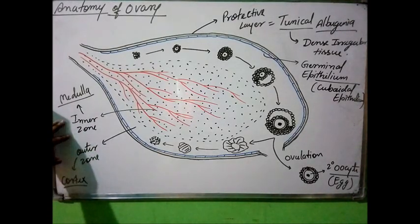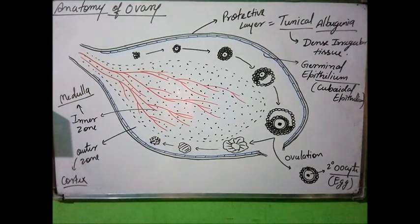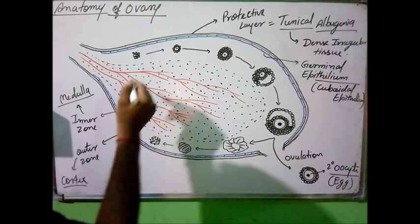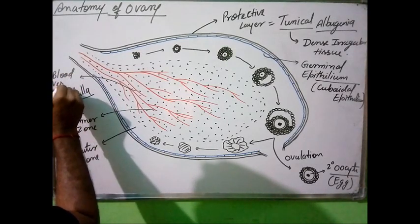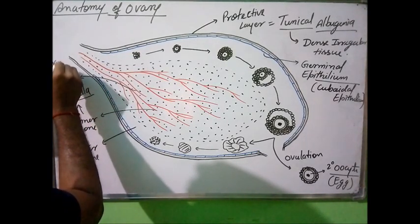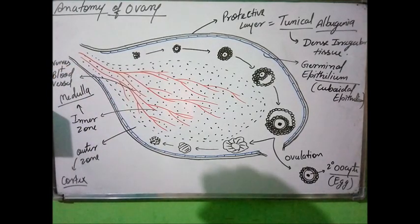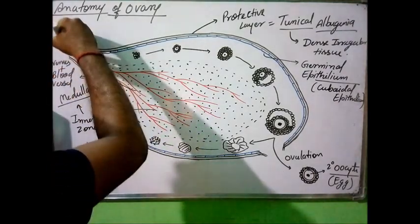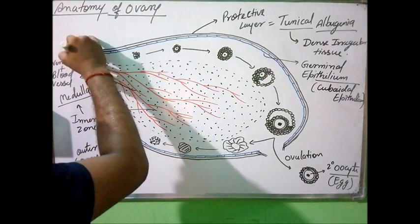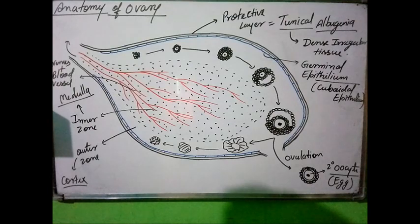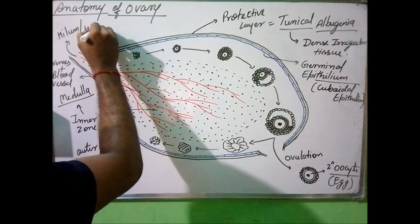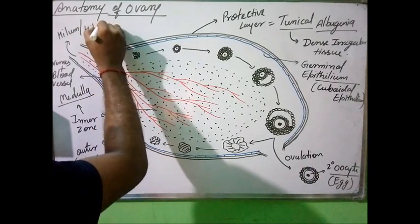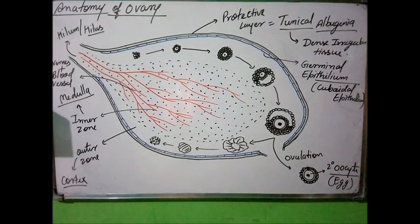The inner zone, the medulla, basically contains blood vessels and nerves. The point from where these blood vessels and nerves enter the ovary is called the hilum or hilus.